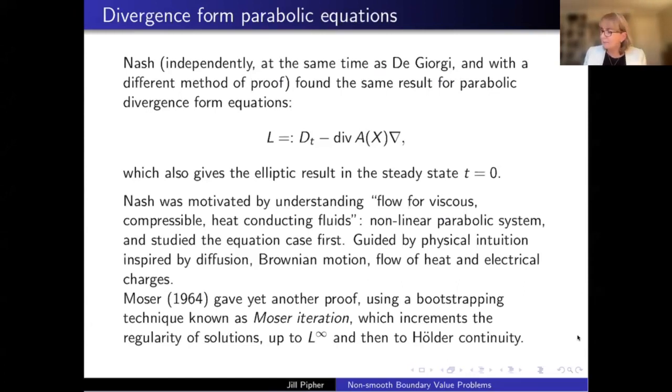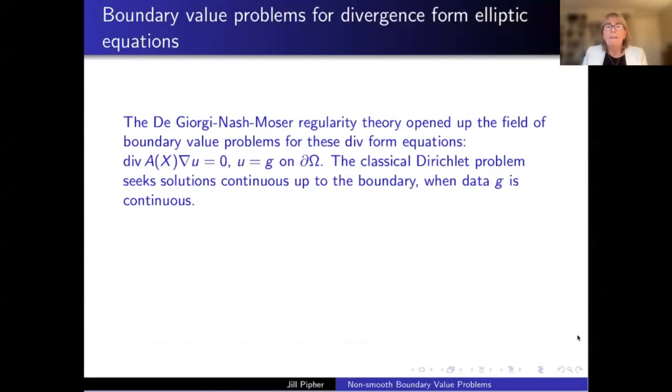And then finally up to L infinity and then bootstrapping that onto Hölder continuity. So this Moser iteration technique turns out to be important. And it's also something that we leverage when we're looking at our P elliptic equations. So the De Giorgi Nash Moser regularity theory just opened up a whole field, you know, not just for these nonlinear equations like the minimal surface equation, but also for linear divergence form equations where you're looking at boundary values.